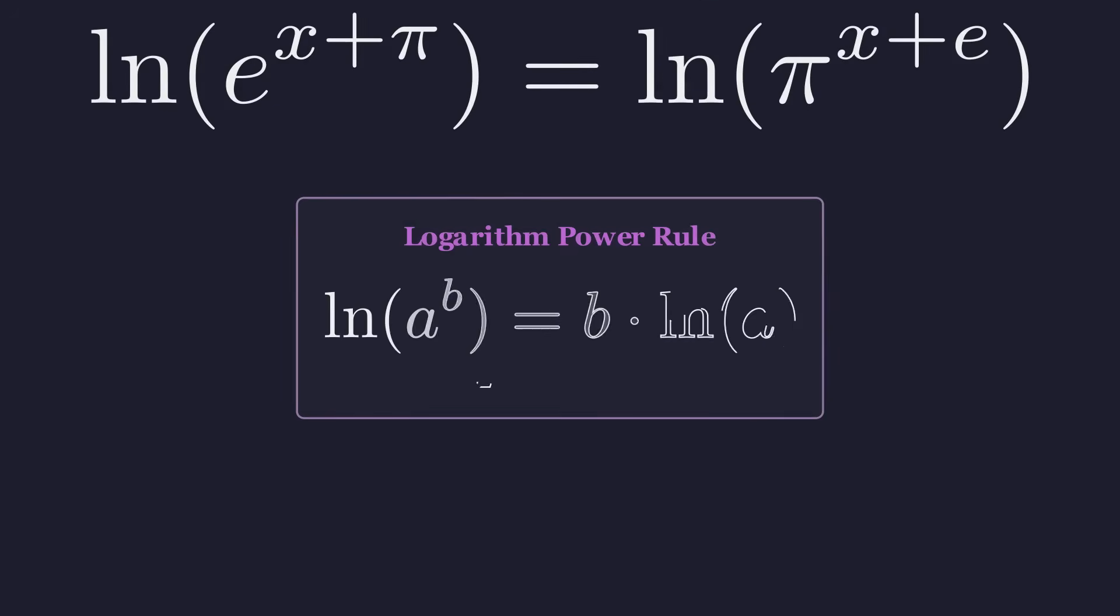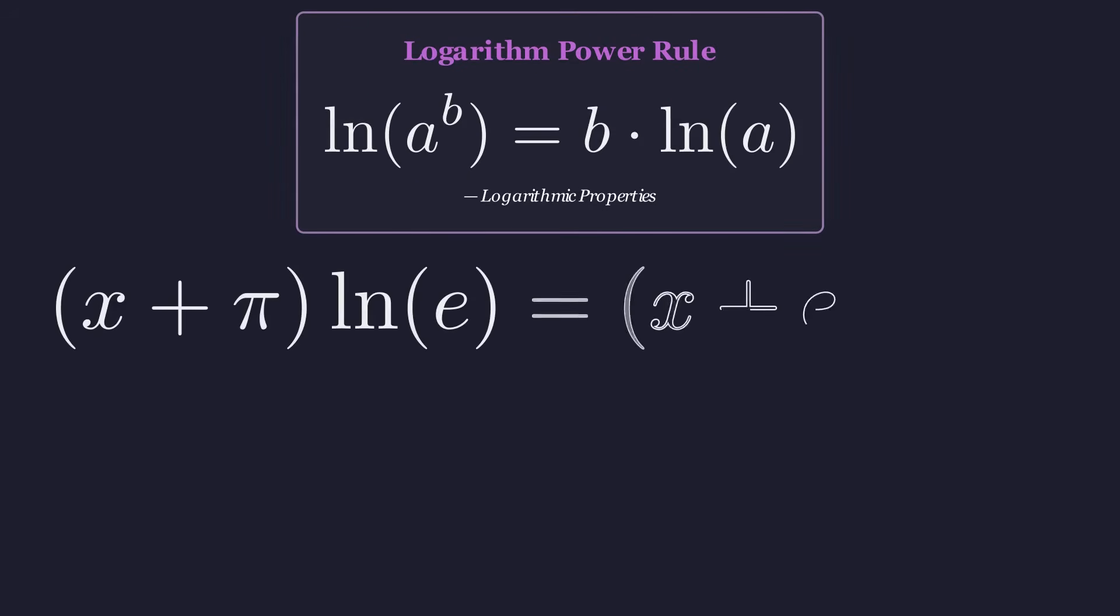Now we'll use a key property of logarithms called the power rule. It states that the logarithm of a to the power of b is equal to b times the logarithm of a. Applying this rule brings the exponents down as coefficients, giving us something much more manageable to work with.